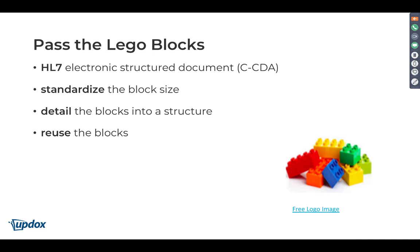An electronic care plan is really an electronic structure — it's a form used electronically, but it's standardized. They use a standardized language called Consolidated CDA, or CCDA. We use this similarly to how we use any other type of standardized form like electronic prescribing. We use the NCPDP SCRIPT standard, or even when you're sending an email, the way that information is being sent has a certain standardization.